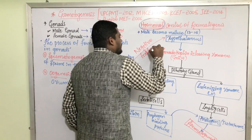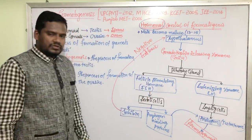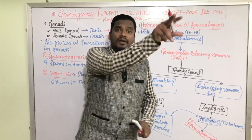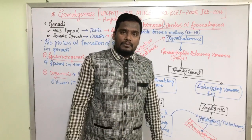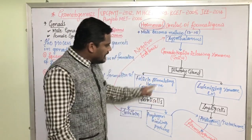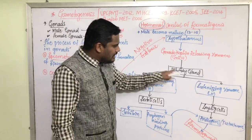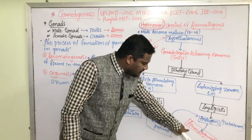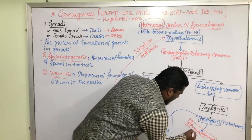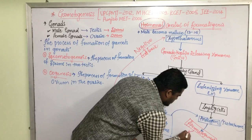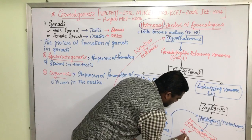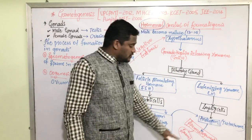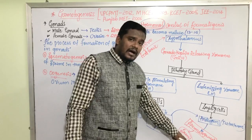Inhibin, the other protein produced by the Sertoli cell, gives a negative feedback to the hypothalamus. This negative feedback is important because after spermatogenesis, sperms are produced. The androgen and androgen-binding protein help in continuous sperm production, and inhibin acts as a regulatory factor to prevent overproduction.